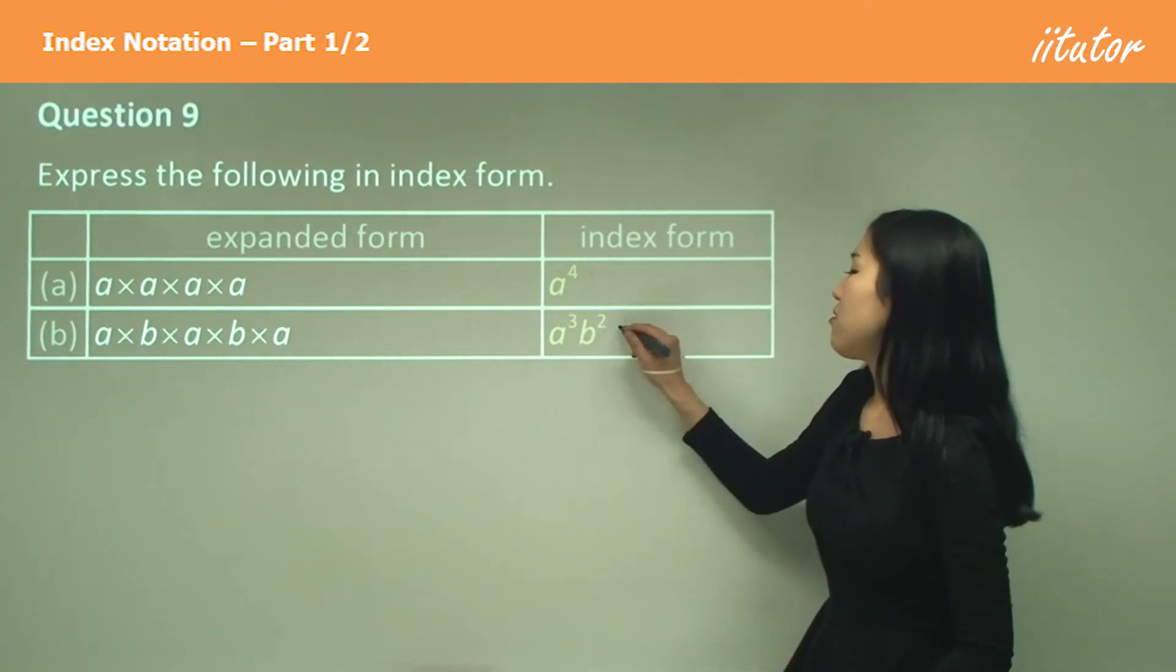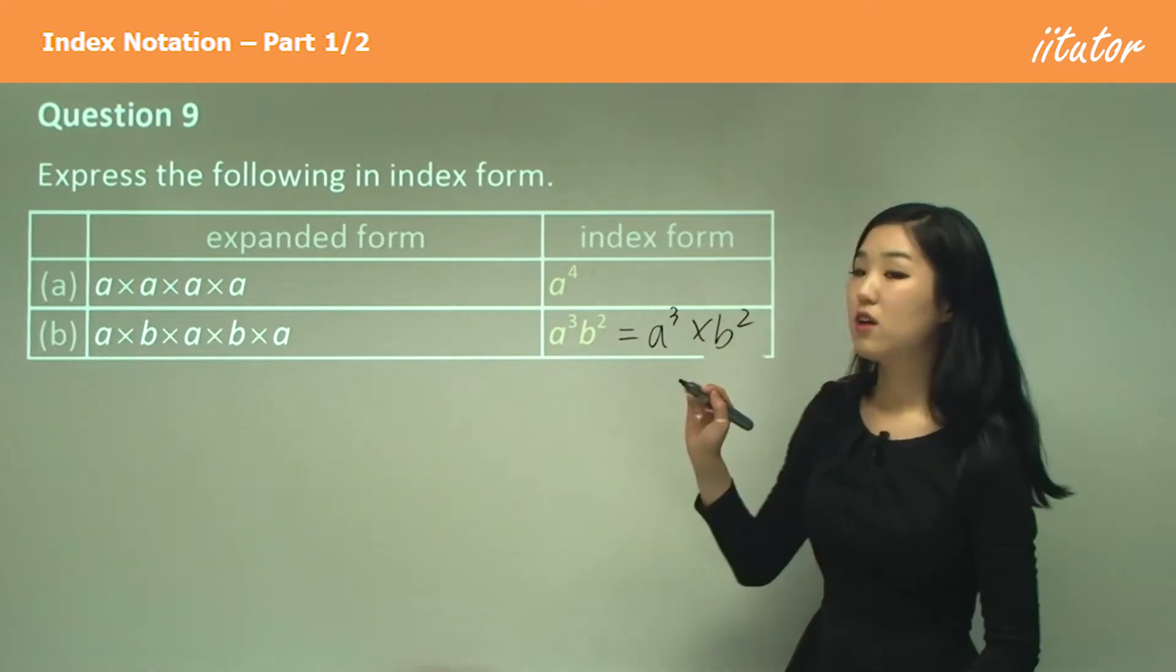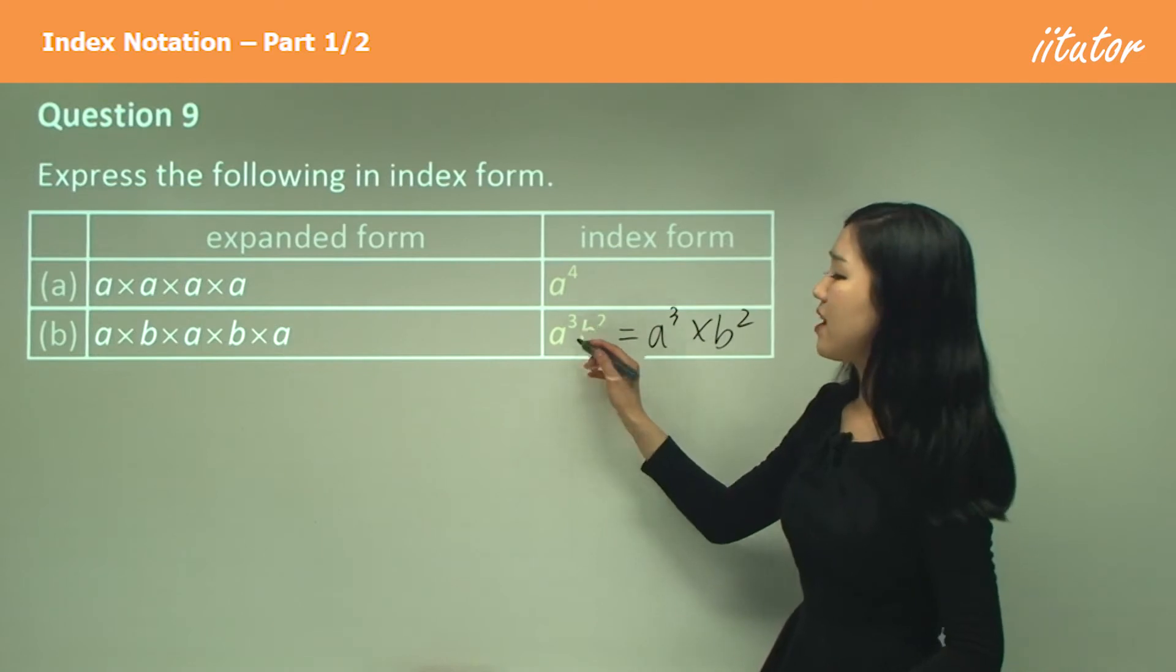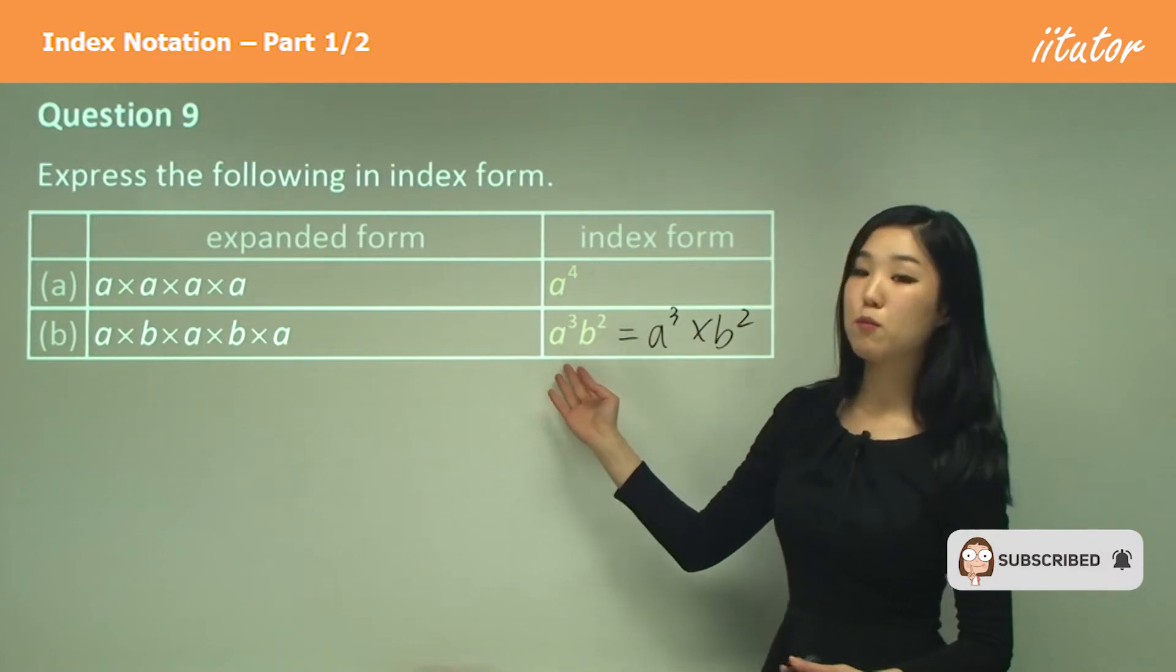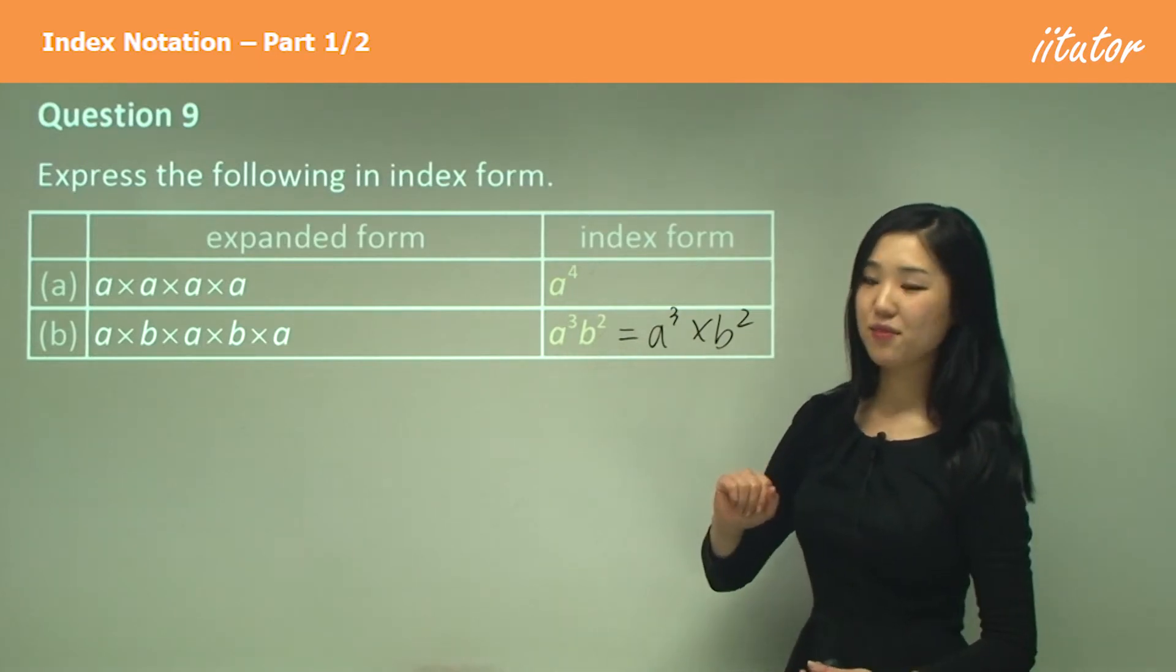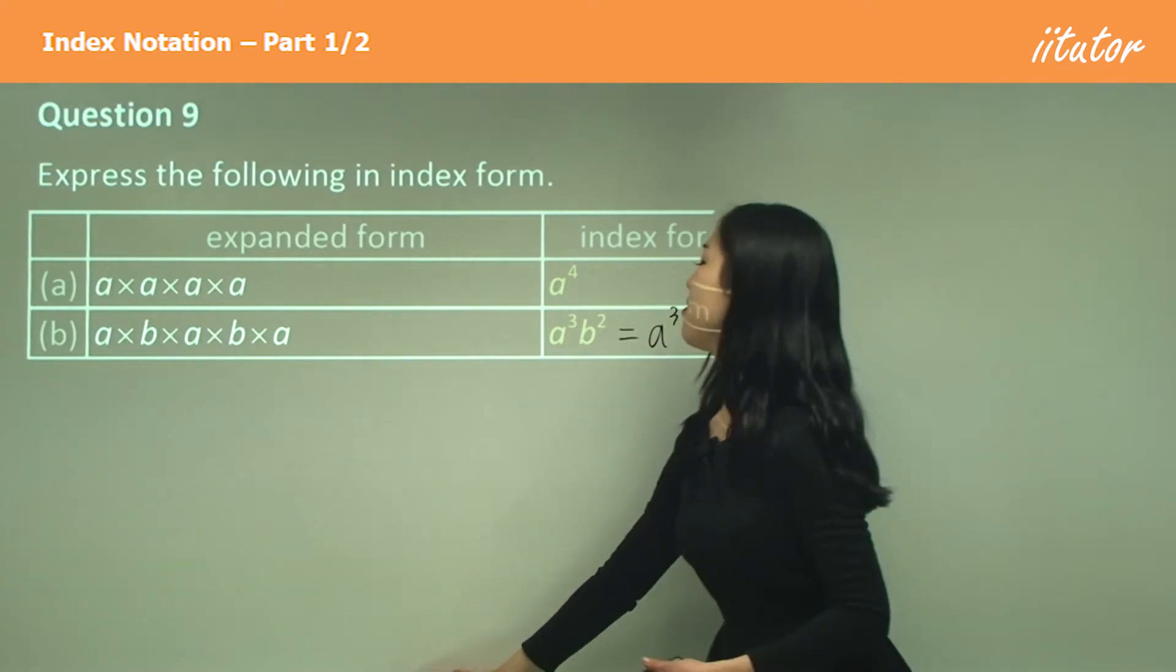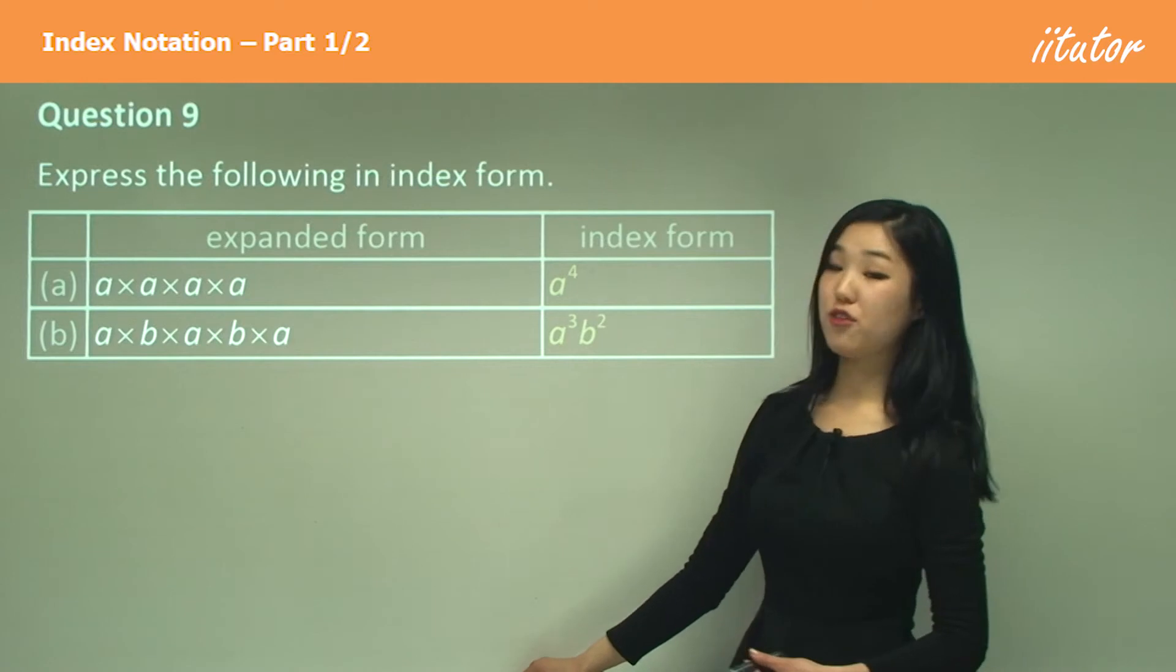Now you can write this as a cubed times b squared but you don't really need the multiplication sign there because if there's nothing in between, it simply means multiply. So you can write it like that but it's probably more simple to write it like this. So three lots of a's, two lots of b's.